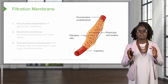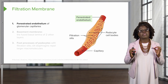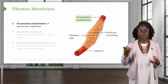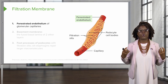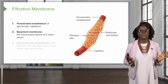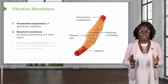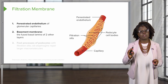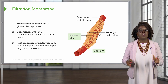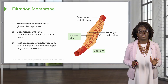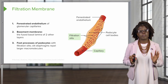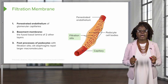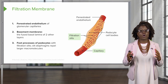The filtration membrane is made up of three layers. First, on the glomerular capillary, we have the fenestrated endothelium — an endothelium with holes or fenestrations that allow fluid to flow out of the capillary. Then we have the basement membrane, which is a fusion of the basal lamina of both the capillaries and the podocytes of the glomerular capsule. Finally, we have the foot processes of the podocytes, which come from the visceral layer of the glomerular capsule. On the podocytes, there are filtration slits with slit diaphragms that repel larger macromolecules.